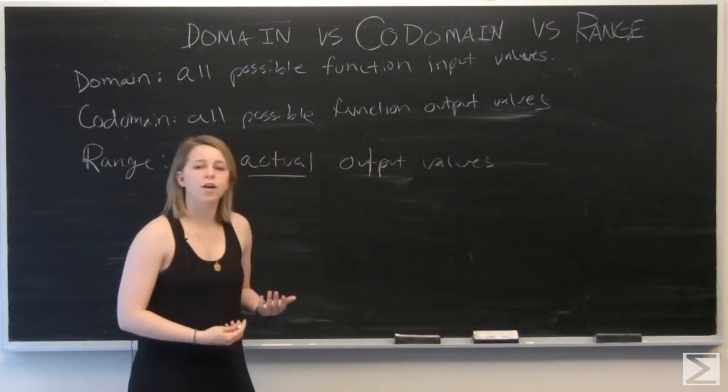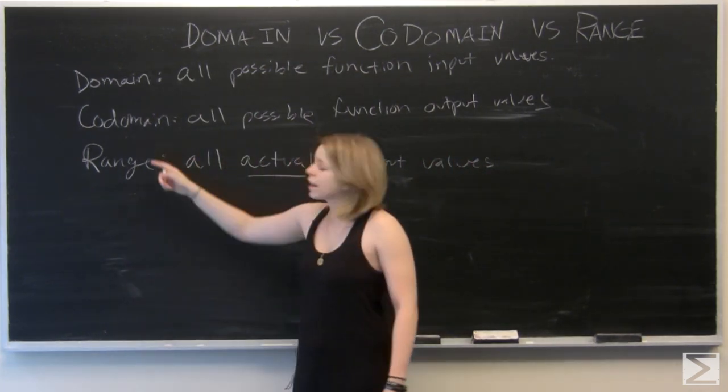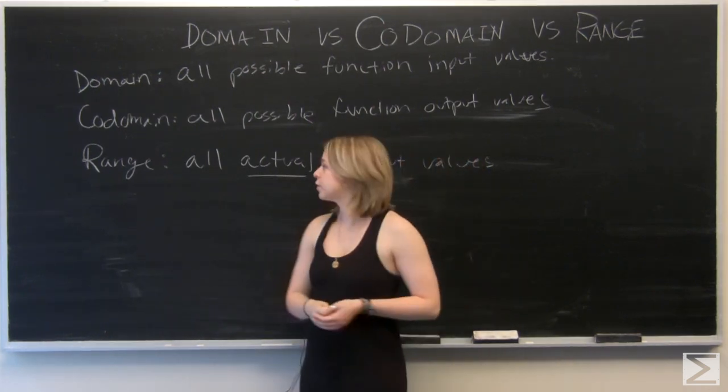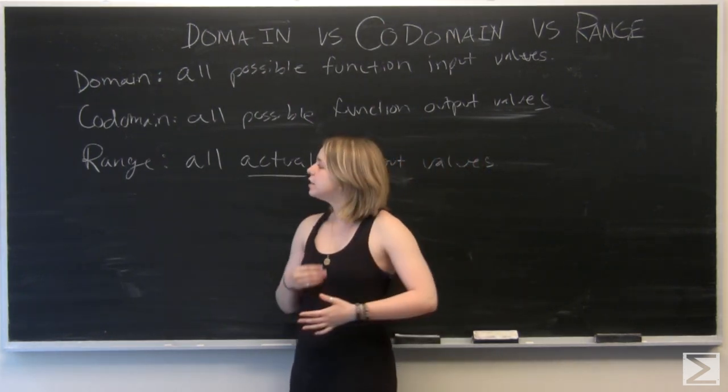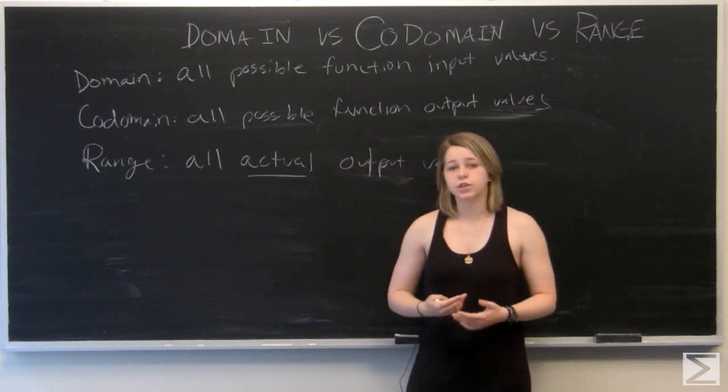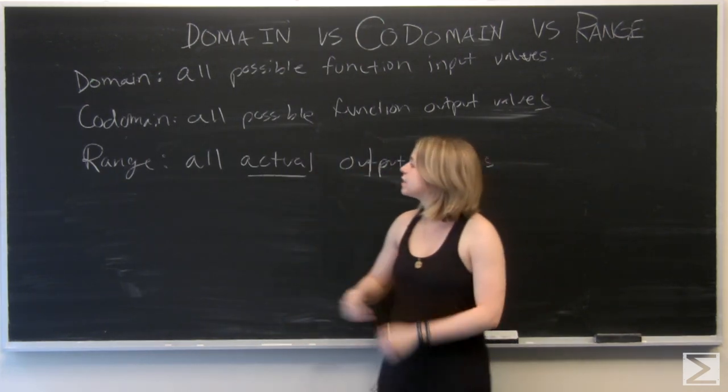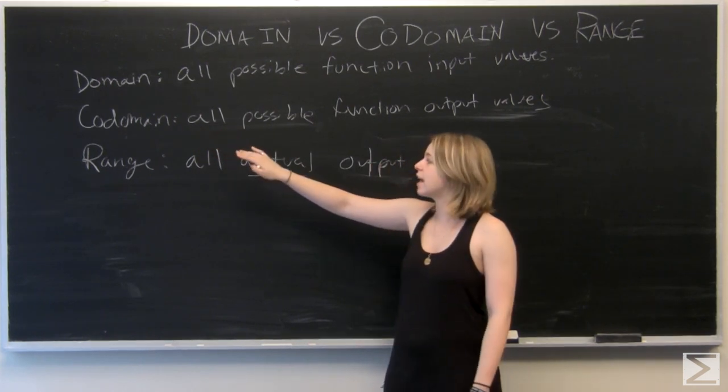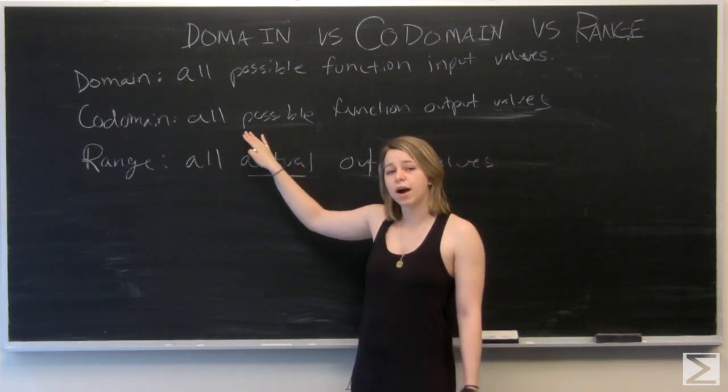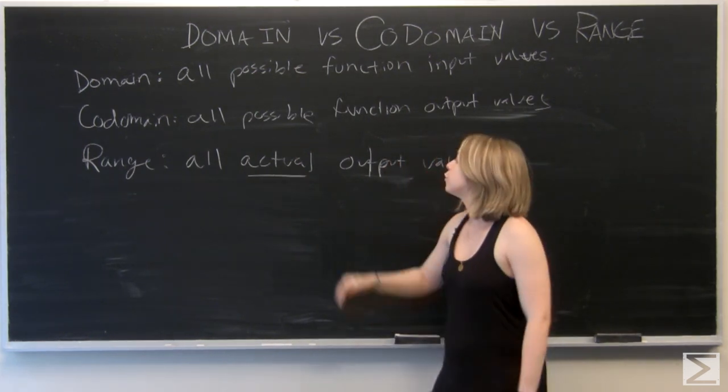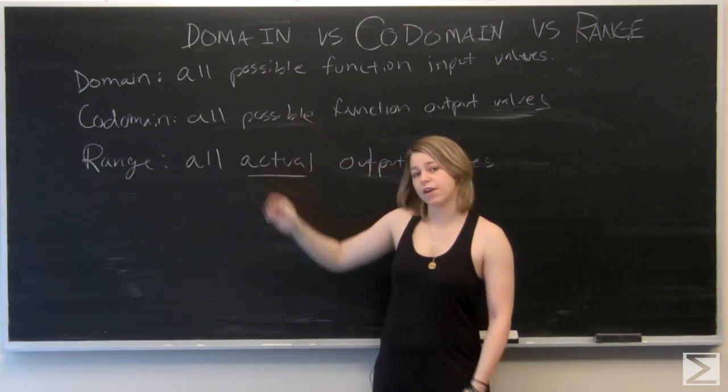So when you're learning about algebra for the first time, codomain and range are often confused. But I'm hoping this video will clear it up a little bit. They have similar definitions. They involve the output of a function. But the key difference is that the codomain is the set of every output that is possible, and the range is all of the actual outcomes when you input an x value.